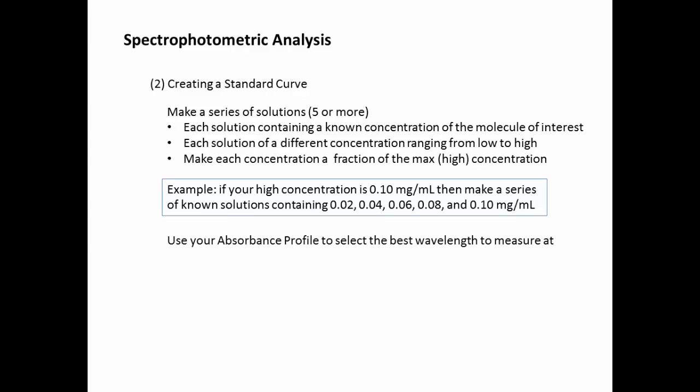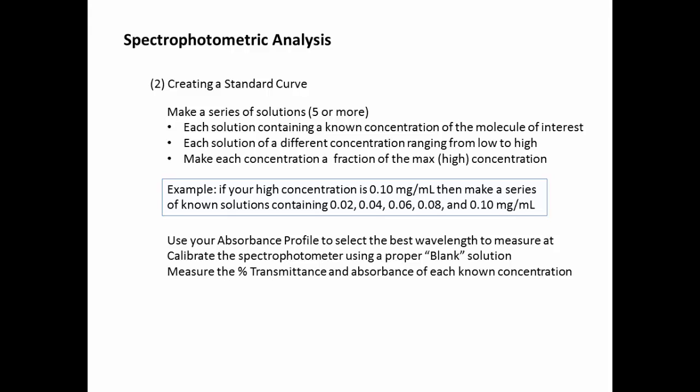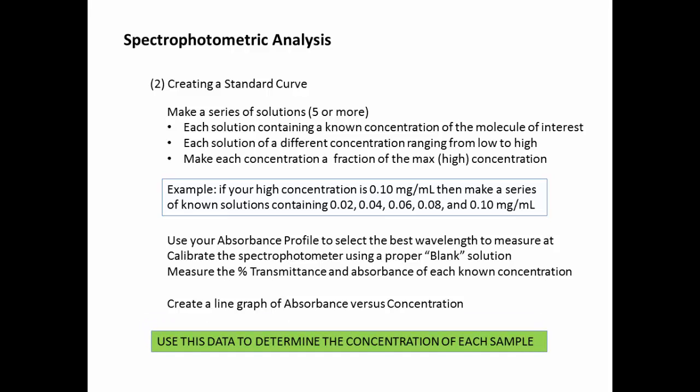Then you're going to use your absorbance profile to select the best wavelength to measure at. Then you'll calibrate your spectrophotometer using a proper blank. Then you'll measure percent transmittance and absorbance of each of these solutions in your series. From that data, create a line graph of absorbance versus concentration. And the purpose of this graph, this data, is so that you can determine the concentration of each sample or an unknown containing that particular molecule.